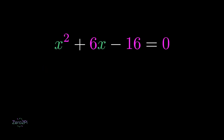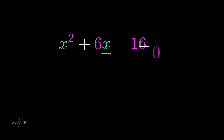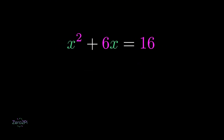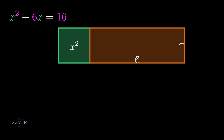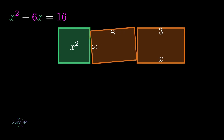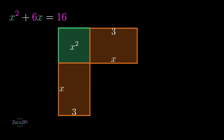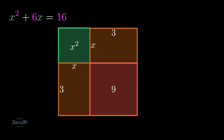Now we go to our second order of business: solving this totally random equation with shapes. After separating the constant term, we will draw the shapes of these variable quantities, starting with x squared. Now for 6x, we will just make a rectangle with sides x and 6. Cutting it into two halves and gluing them back together like this, we get this very suspicious shape, which just so happens to be missing a square to become a bigger square. We will add a new square of sides 3 and area 9 units.